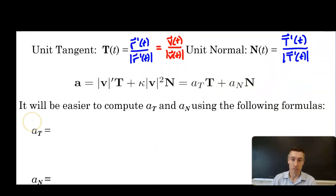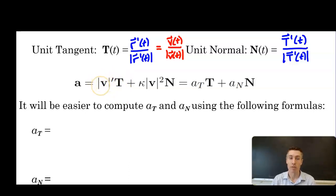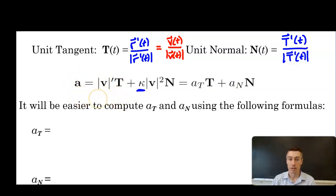The acceleration vector defined as the sum of two components: the tangential component a_T is the derivative of the magnitude of velocity (derivative of speed), and the normal component a_N is curvature times the magnitude of velocity squared. This shows a connection between curvature and acceleration in three-space. Notationally, the scalar for the tangent direction is a_T and the scalar for the normal direction is a_N.